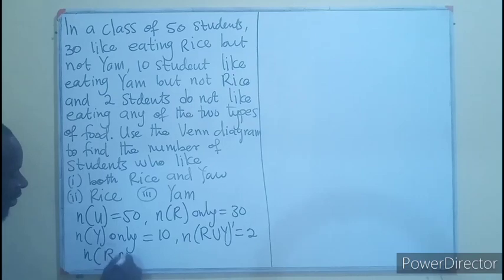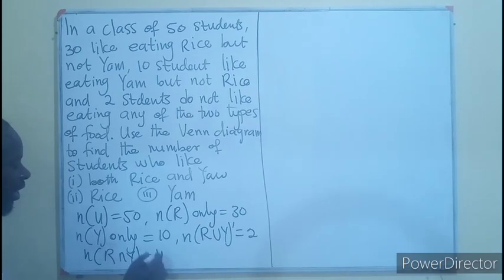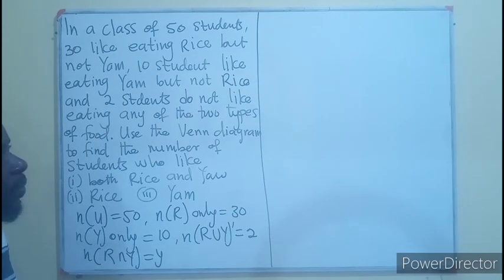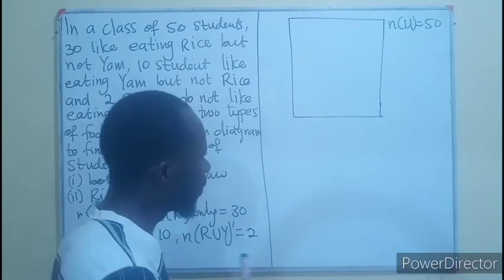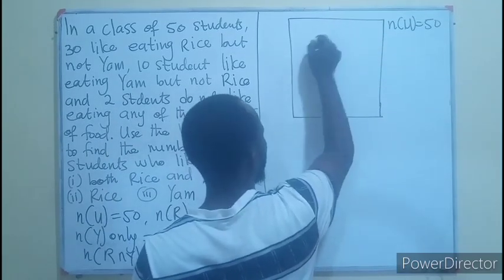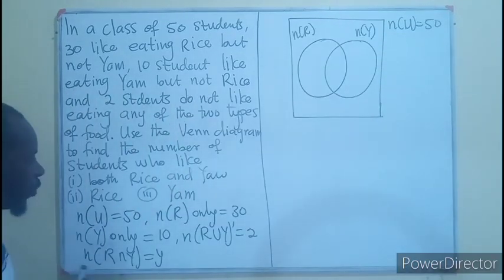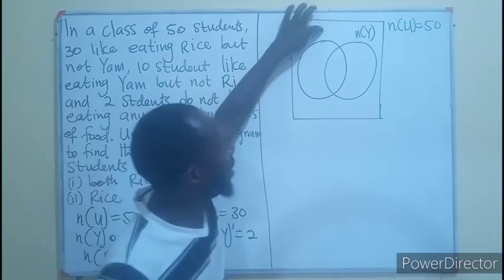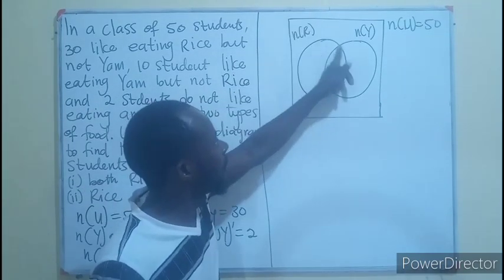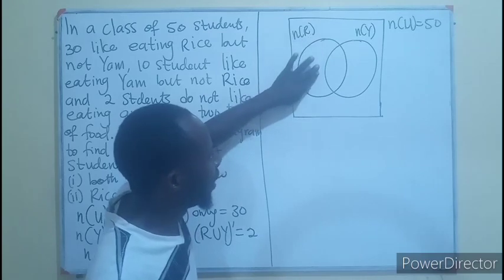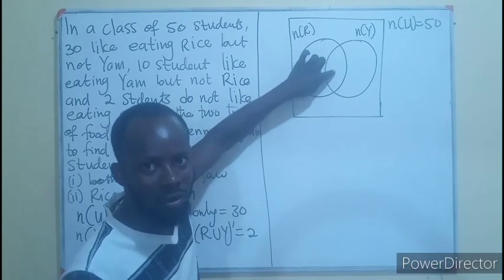Number of R intersection yam, we can represent that for a variable. So, that is the universal set. Now, our two sets.